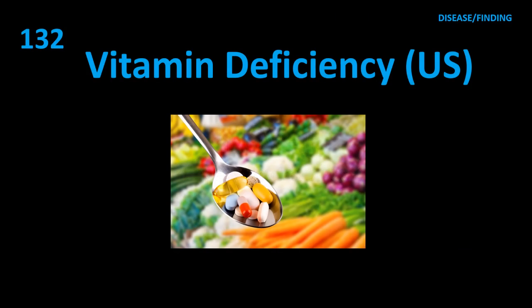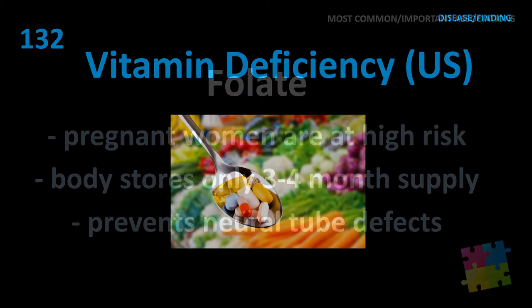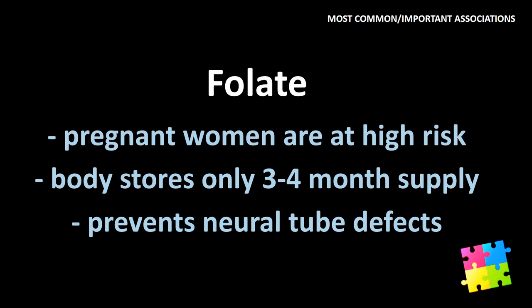Item 132: Most common vitamin deficiency in the US — folate. Pregnant women are at high risk. Body stores only 3 to 4 months supply. Prevents neural tube defects.